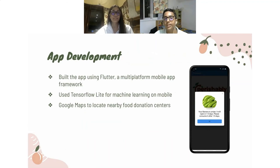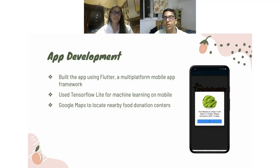We built the app using Flutter, which is a multi-platform mobile app framework. It makes it simpler to develop iOS and Android apps as it allows you to use only one code base. We used TensorFlow Lite for running the machine learning algorithm on mobile, and Google Maps was used to locate nearby food donation centers.